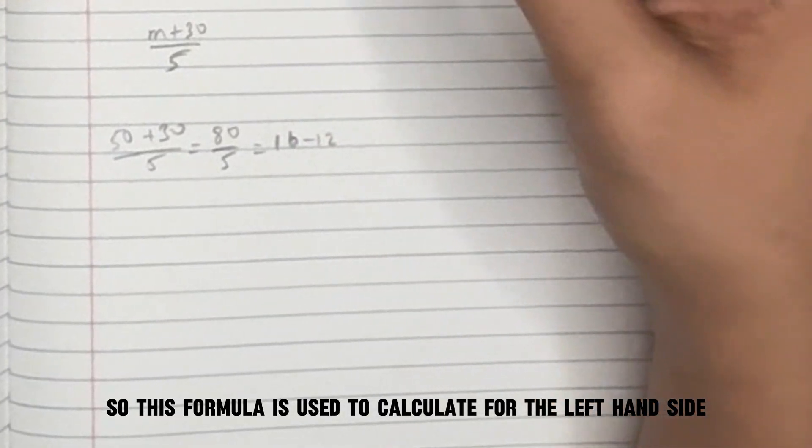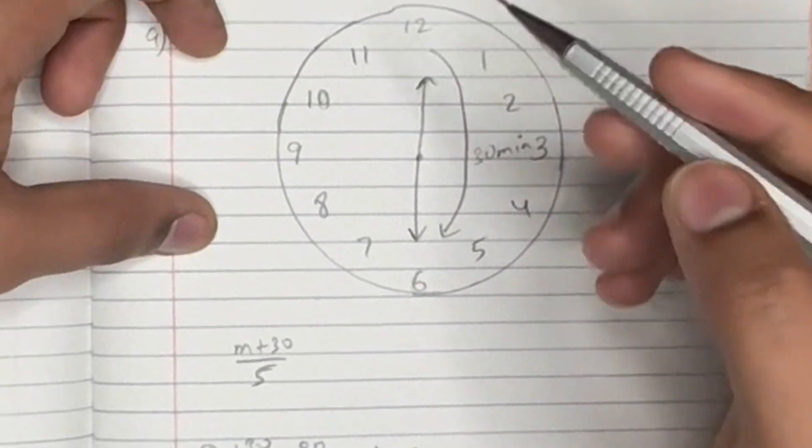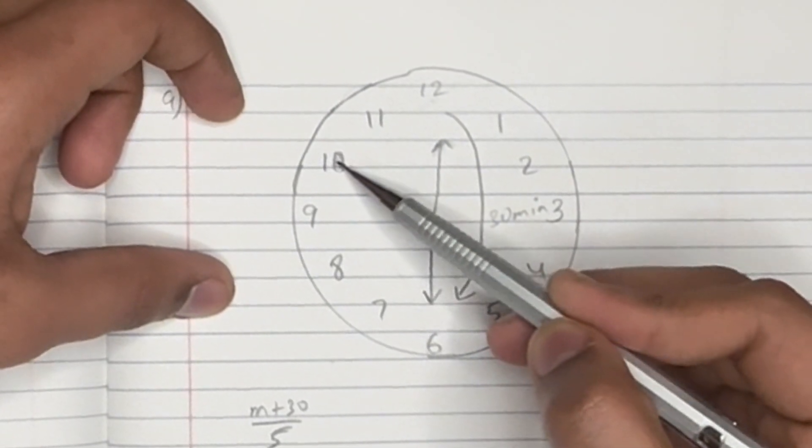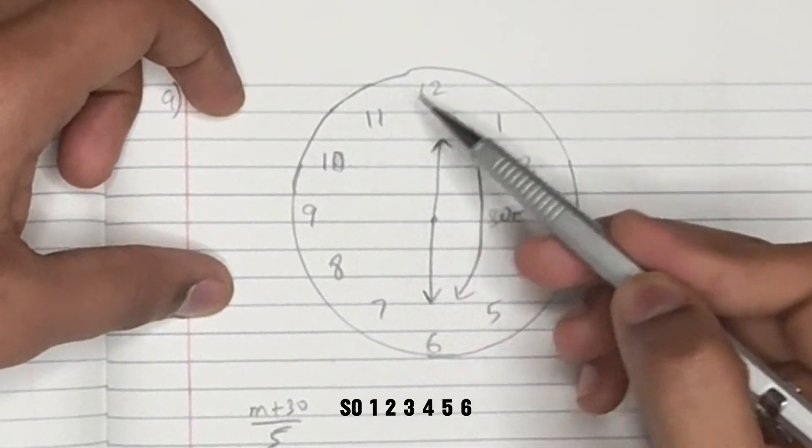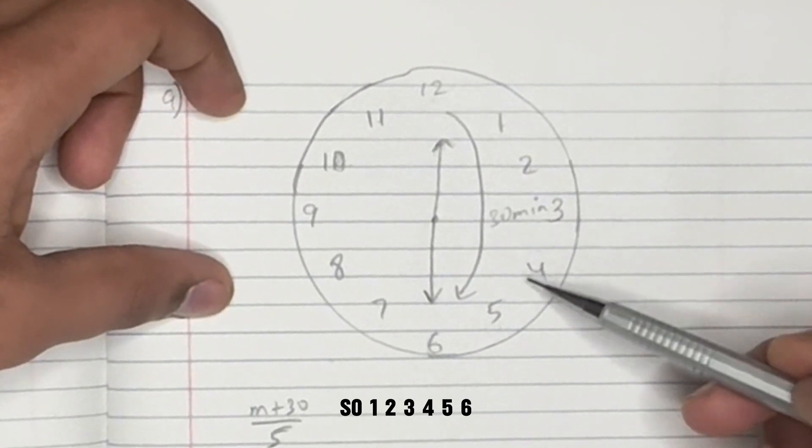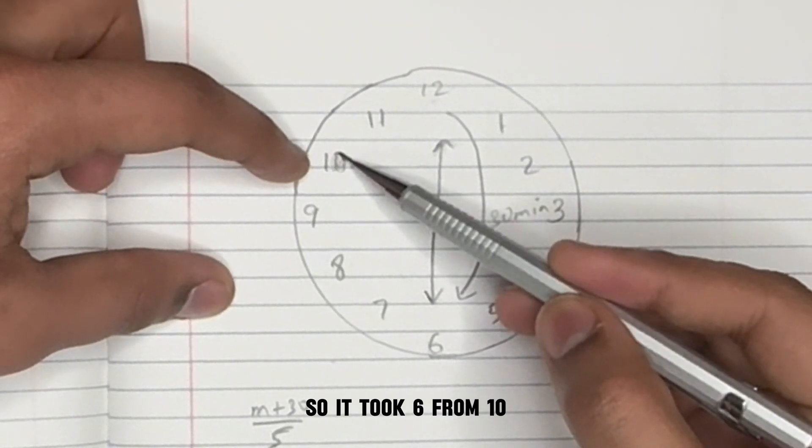This formula calculated for the left-hand side is, so if we take 10, we add 30. So we have to go 6 to the other side. So 1, 2, 3, 4, 5, 6. So it took 6 from 10.